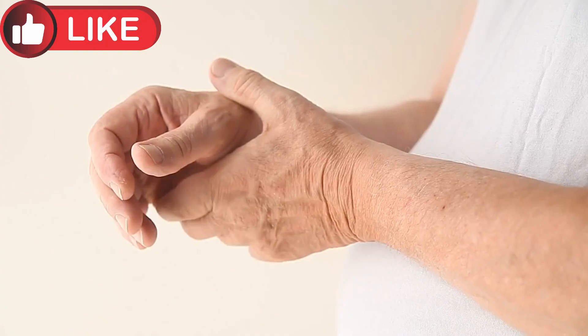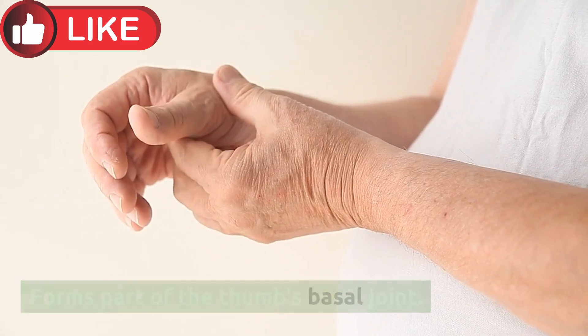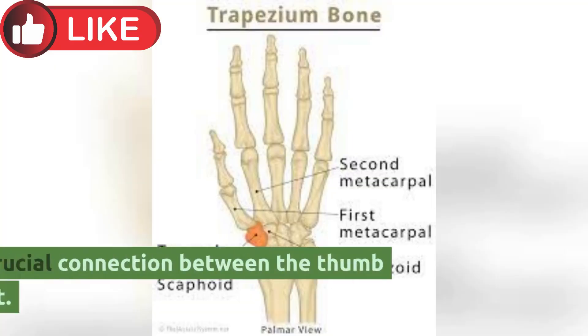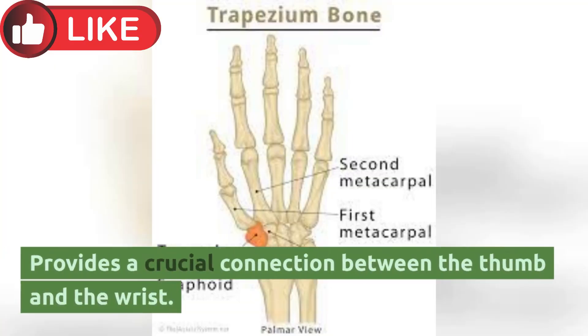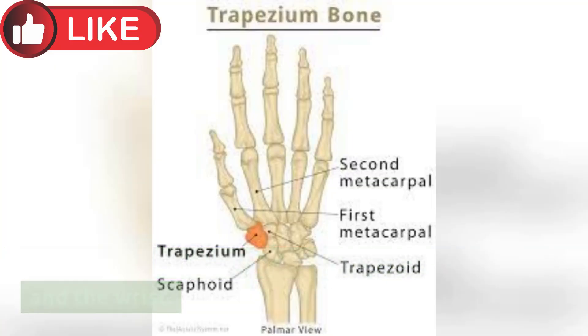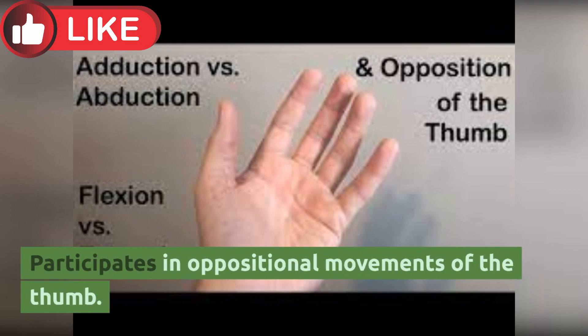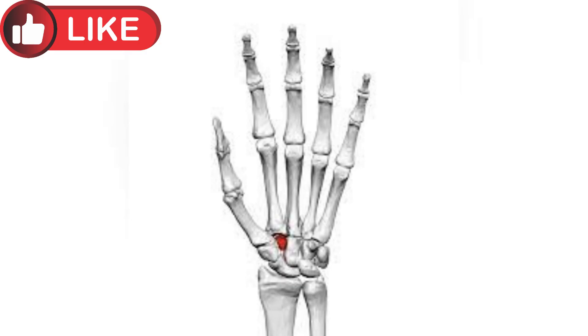Trapezium: Forms part of the thumb's basal joint, provides a crucial connection between the thumb and the wrist, and participates in oppositional movements of the thumb.